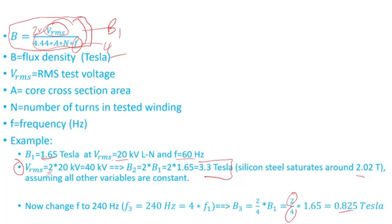That's one of the reasons why during the induced voltage test the frequency is increased—because the voltage is increased. And since the flux density is proportional to volts per turn, that means if you increase the voltage, you must increase the number of turns to avoid saturation, or...